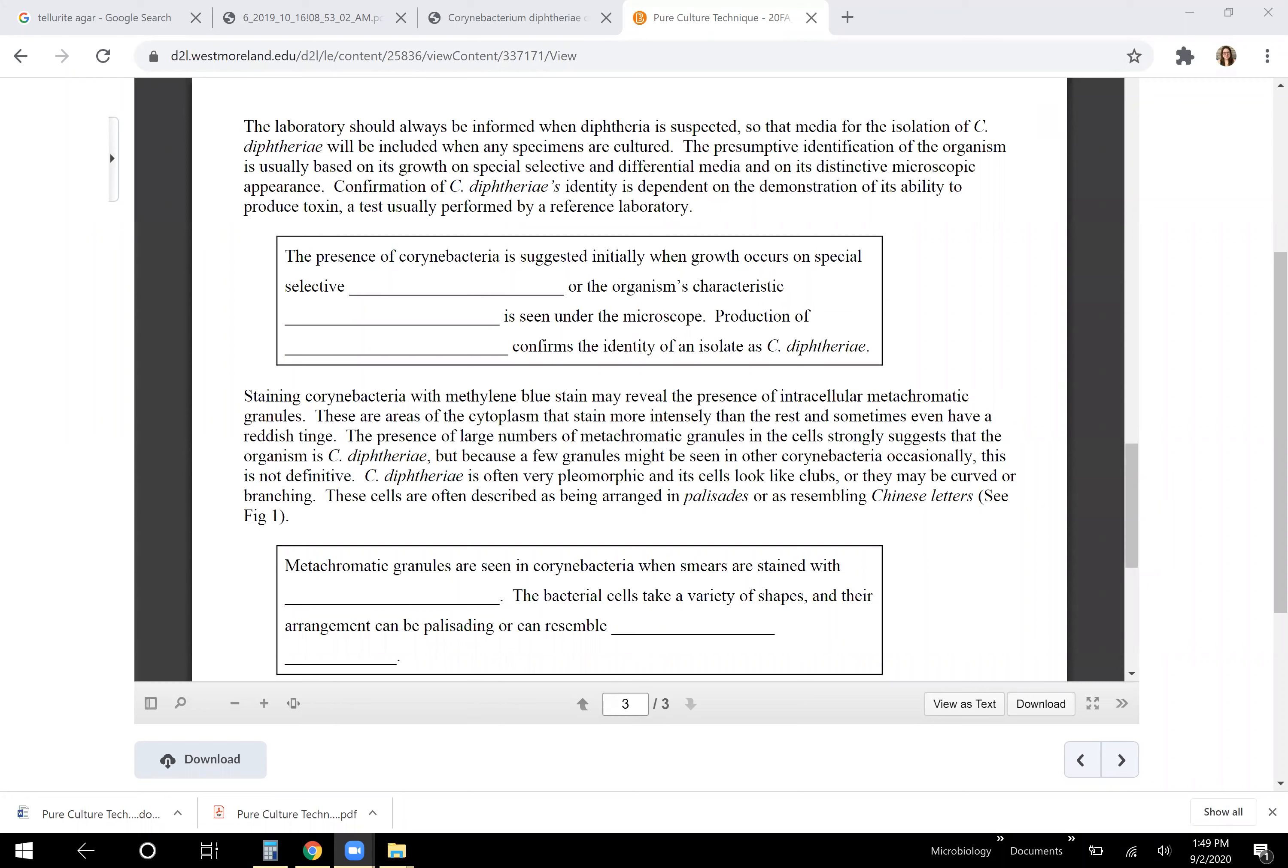So it's important to know the difference between a selective media and a differential media. A selective media usually has something extra or something missing in order to promote growth of only one kind of bacteria on the petri dish.